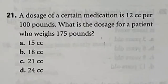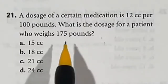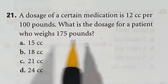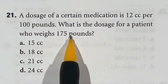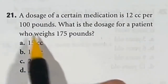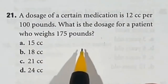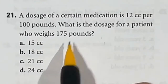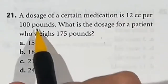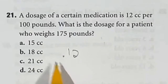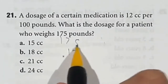Let's go ahead and dive right back into the questions. For question 21, we're essentially saying if there's 12 cc's for 100 pounds, how much would you use for 175 pounds? We can look at this as a fraction: 12 over 100 equals x over 175, then cross multiply and divide. Or we could just say 12 over 100 is the same as 0.12 and multiply that by 175.